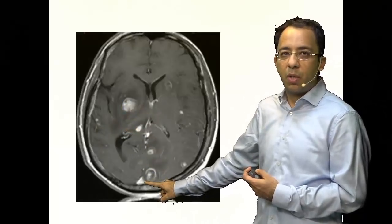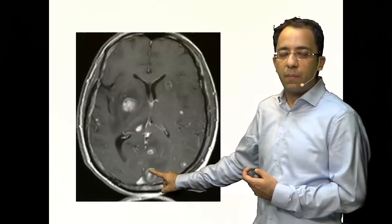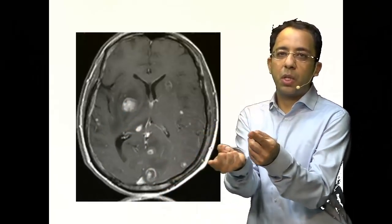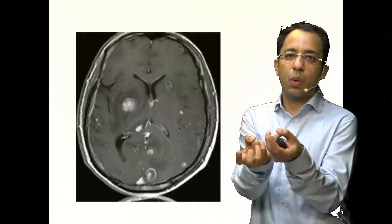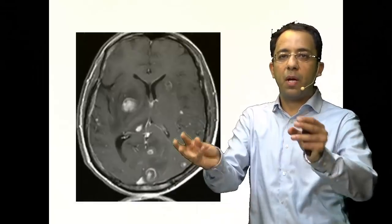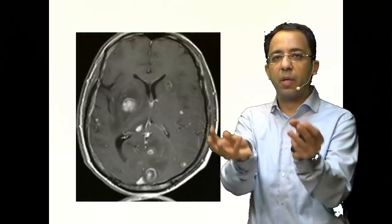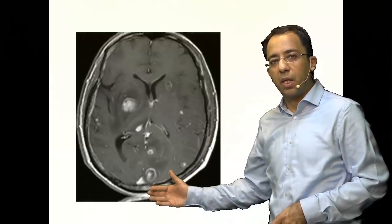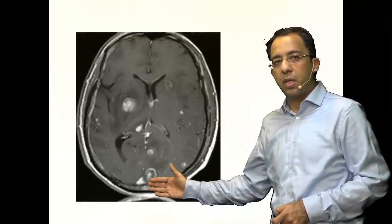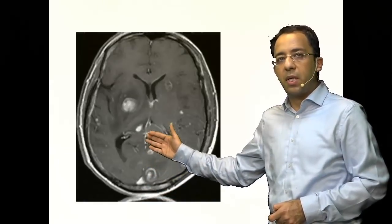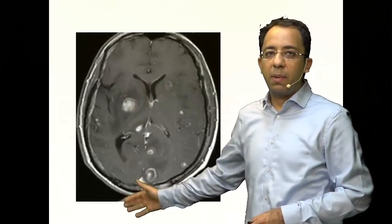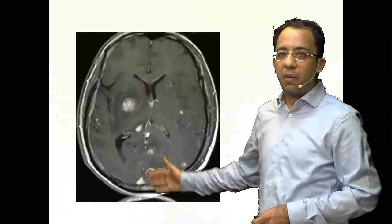On the T1 post-gadolinium image you can see the lesions showing ring enhancement. That ring of enhancement depicts the zone of hyperemia and the inflammatory area where blood-brain barrier disruption has occurred — confirming multifocal ring-enhancing lesions in the basal ganglia and gray-white matter junction.